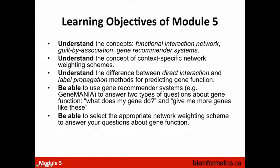I hope we've covered the learning objectives: functional interaction networks, guilt-by-association, gene recommender systems, different ways of weighting networks and types of data, and two different algorithms for predicting gene function — direct neighbor interaction and label propagation. You should be able to use a gene recommender system to answer questions and select the appropriate network weighting scheme.